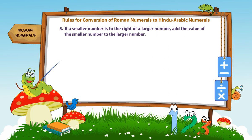Rule number 5. If a smaller number is to the right of a larger number, add the value of the smaller number to the larger number.